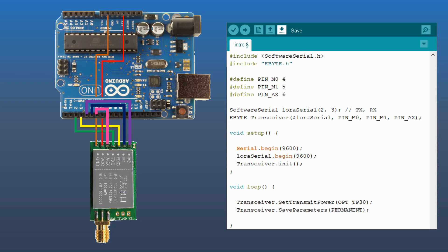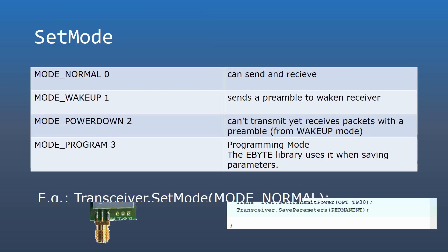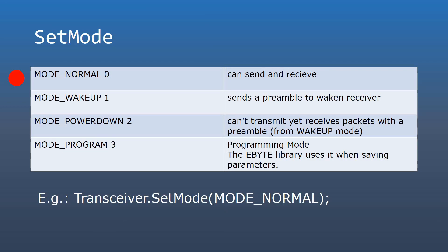Let us discuss a few parameters. Set mode: by default the transceiver operates in the normal mode. You can move the receiver to the power down mode to save power — here it would sleep until it receives a preamble. In that case you have to configure the sender to send the preamble, that is the wake-up mode. The program mode is used for configuration; you do not need to worry about it most of the time since the eByte library would enter and exit it when necessary.